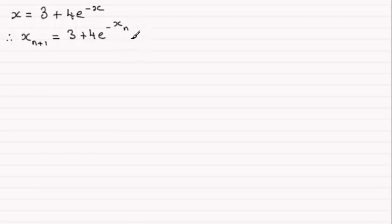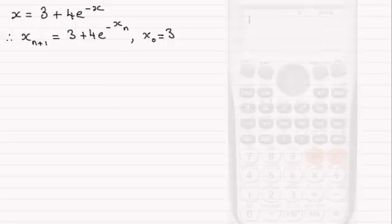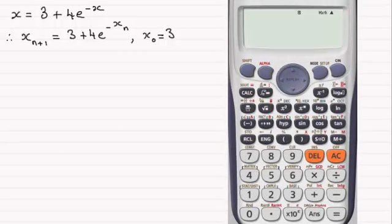So our first approximation, let's call it x₀, is 3 as we're told. Now if we use a scientific